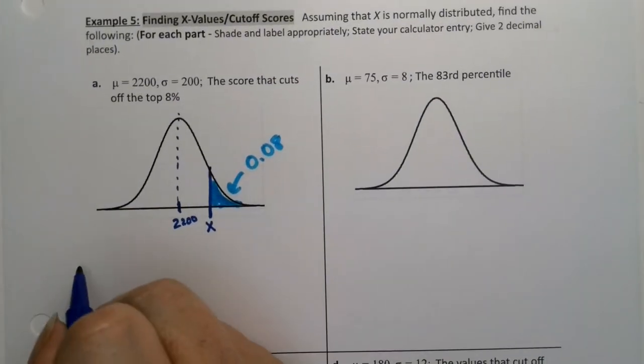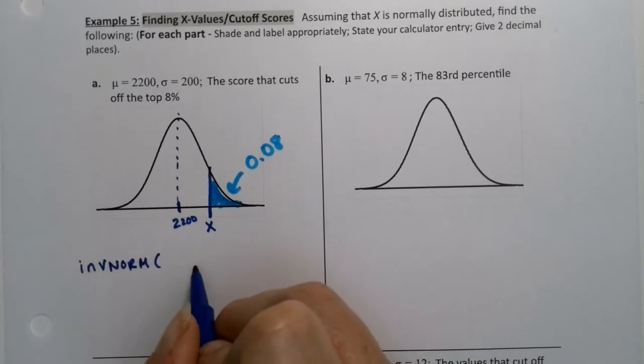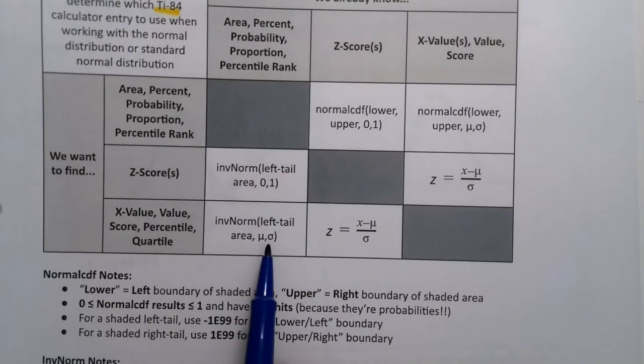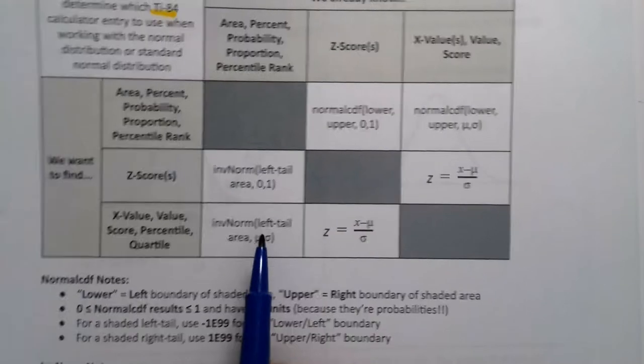And what I'm looking for is this x value, right? I don't know what the number is that cuts off the top 8%. According to my table, my decision matrix, I need to use inverse norm. And it says left tail area, comma, mu, comma, sigma. The left is actually a little bit of a fake out. It's left for most calculators, but not all.